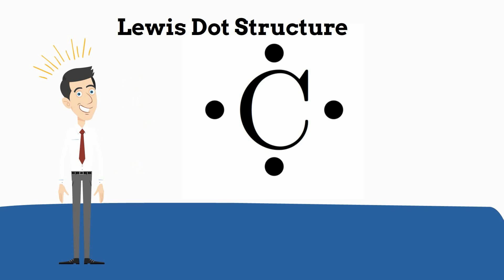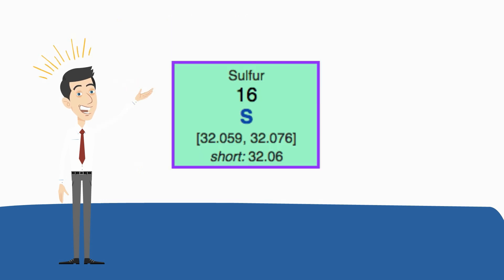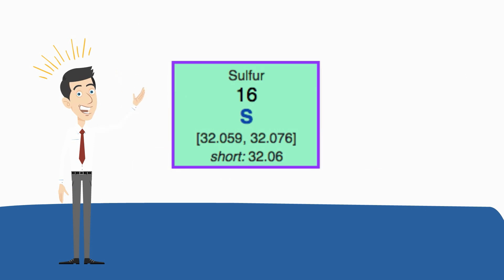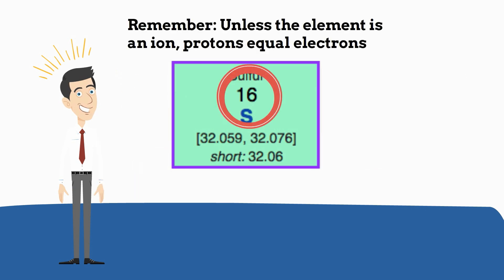Let's work another example. Let's look at sulfur because it has a higher number, 16. Sulfur is in period 3, so I know it's going to have 3 shells. It has 16 electrons because it has 16 protons.